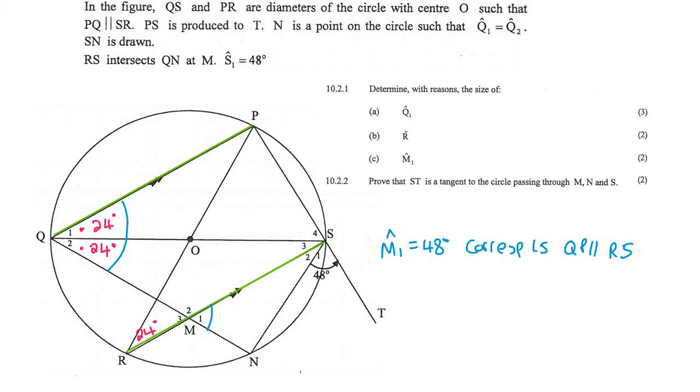And the last question, prove that ST, which is this line, is a tangent to the circle passing through M, N, and S. So we have to try to draw a little circle for ourselves.